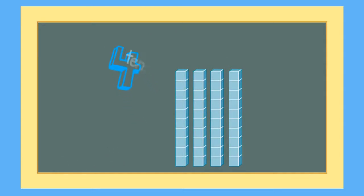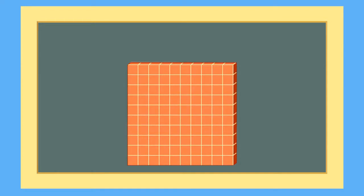4 groups of 10 equals 40. When we have 10 groups of 10, we can make 100. We use a 100 flat to show a group of 100. Can you say 100 flat? Awesome job!